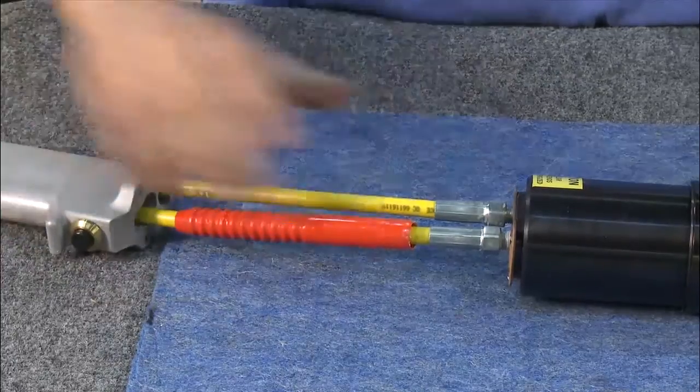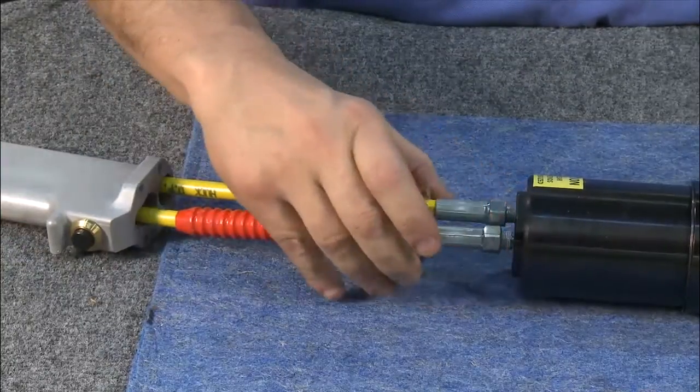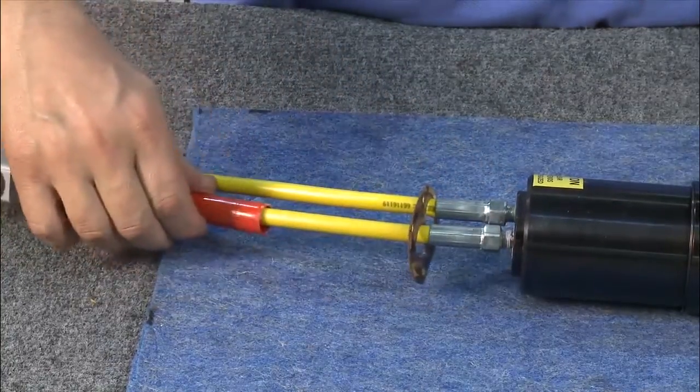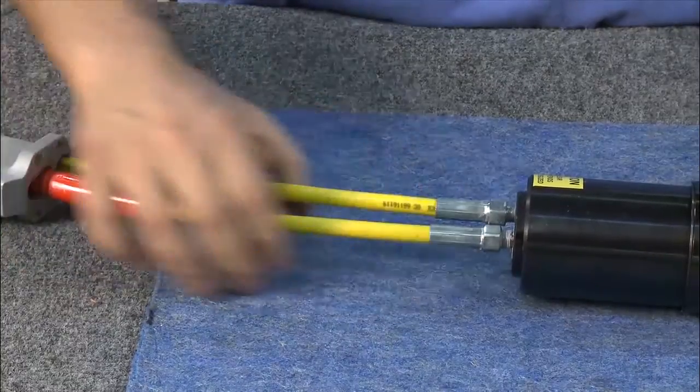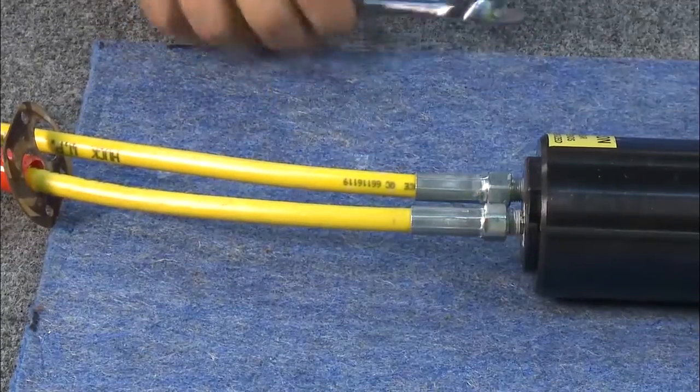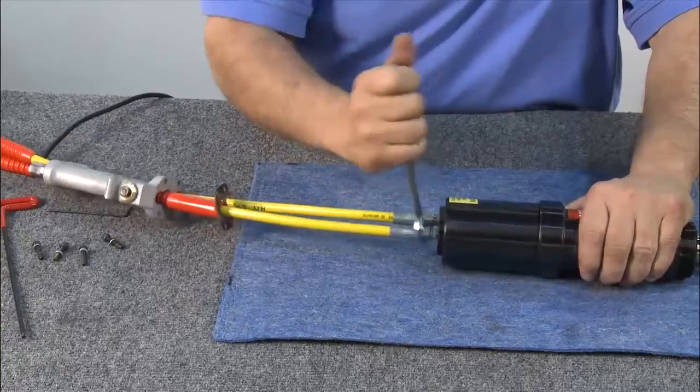Next, break loose and remove the return pressure hose, which is the center hose.